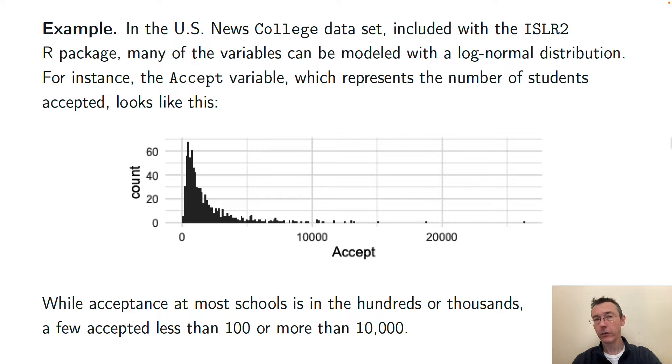If you plot a histogram of those acceptance numbers, you get this. Most of the values are in the hundreds or thousands, but you do have a few that are in the single or double digits and a few that are upwards of 10,000. So a handful they get pretty big.